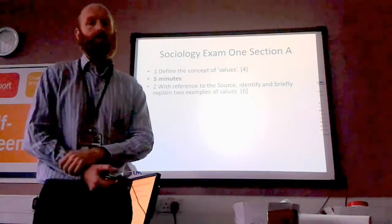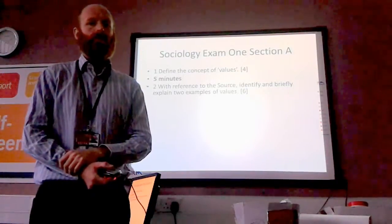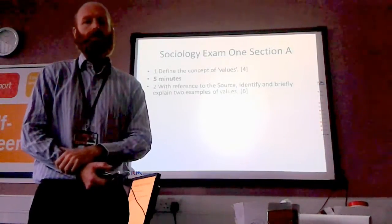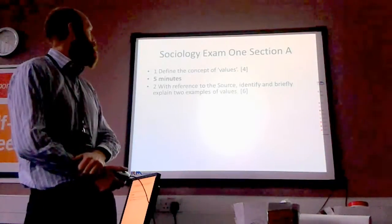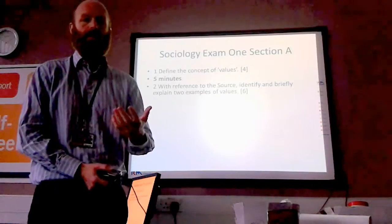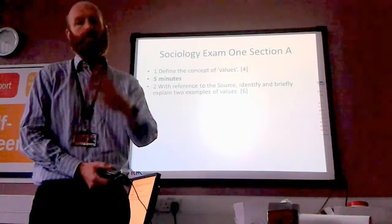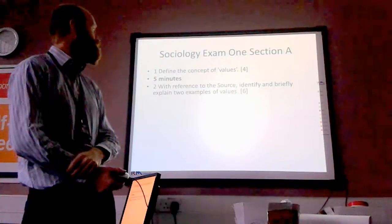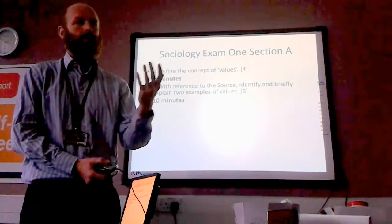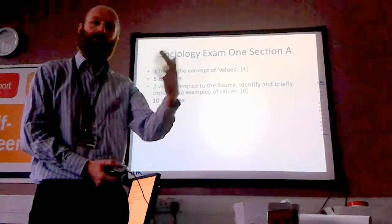The second question: with reference to the source, you need to refer to the source material which you're given to help you. Identify and briefly explain two examples of values. In my first answer I gave an example of values — really it was the core definition they were looking for in question one. For question two you're going to briefly explain two examples, such as the importance placed on the sanctity of human life, or the importance placed on education. You'd give evidence in terms of studies, data, contemporary examples and sociological perspectives like Marxism and feminism. That's probably 10 minutes — a maximum of a side of A4, maybe two-thirds. Two clear paragraphs, clearly identifying the examples with evidence to support each one.